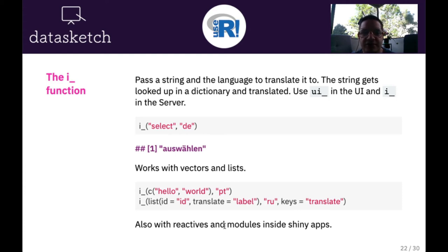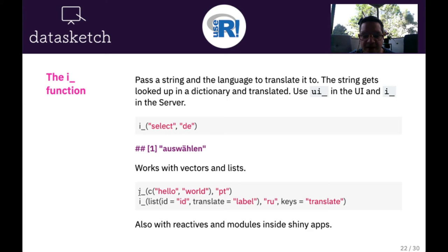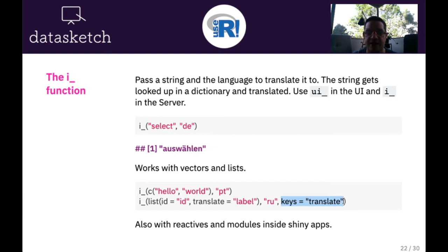The i_ function is the basis of everything and is used mostly in the server. Make sure to use the ui_ function in the UI. For example, i_ with select and DE for German gives us 'Ausweilen'. The function also works with vectors, so we can pass vectors of keywords. It also works with lists — and we can define specifically which keys from the list to translate. It also works with reactives and modules within Shiny apps.